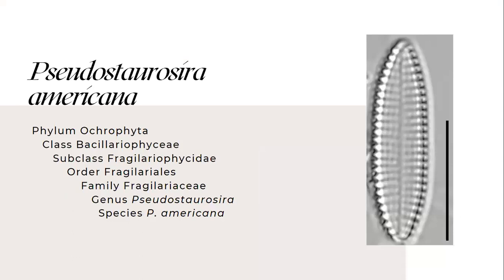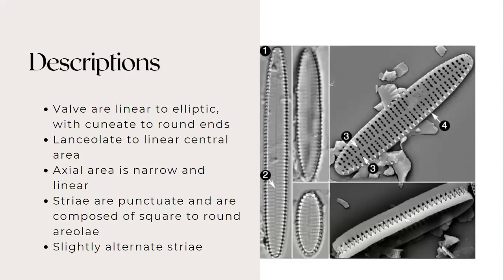So for the next species, it's named as Pseudostaurosira americana from the family Fragilariaceae. Its descriptions are, its valves are linear to elliptic with cuneate to round ends. It has lanceolate to linear central area and its axial area is narrow and linear. Its striae are punctate and are composed of square to round areolae and it has slightly alternate striae.